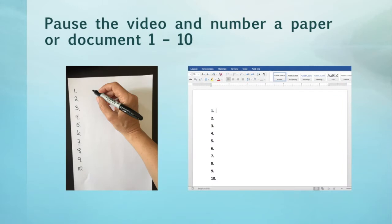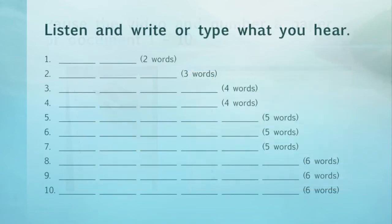To help you hear this type of coalescence, I'm going to say ten phrases. Please write what I say. If you need to, pause the video and number a paper or document one through ten. So again, listen and write or type what you hear. Each line will tell you the number of words in that phrase.